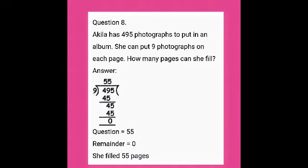In 49, how many 9s are there? There are 5 nines. 5 × 9 = 45. So 49 − 45 = 4. Take down the 5 — now we have 45. We already know 5 × 9 = 45. Subtracting gives 0. Therefore quotient is 55, remainder is 0. She can fill all the photographs in 55 pages.